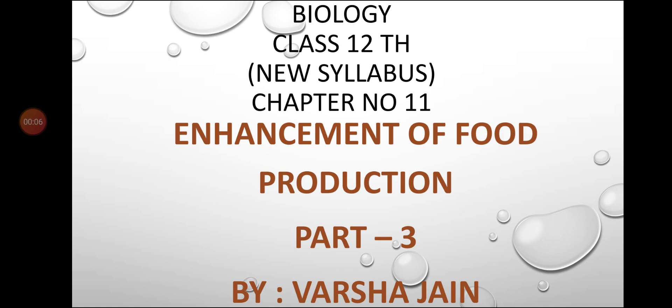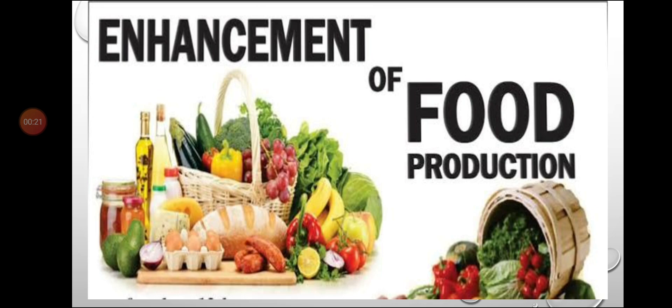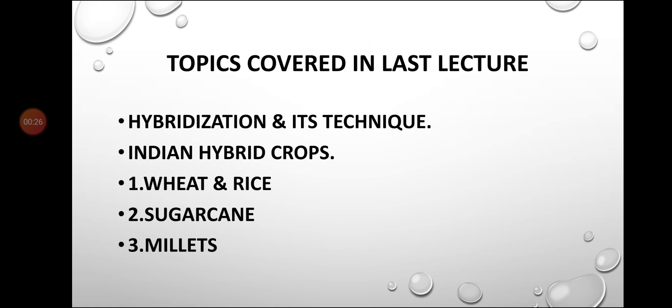Hello students, today we are continuing with Biology Chapter 11: Enhancement of Food Production, Part 3. This is the third lecture of the chapter. In our last two lectures, we studied plant breeding, objectives of plant breeding, hybridization and its techniques, and different Indian hybrid crops — wheat, rice, sugarcane, and millets.